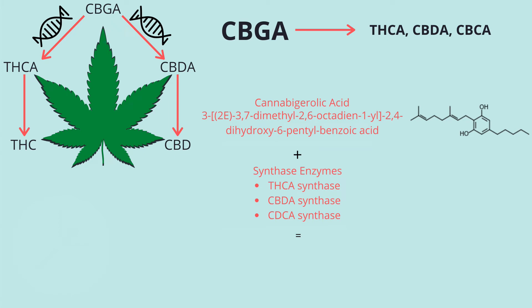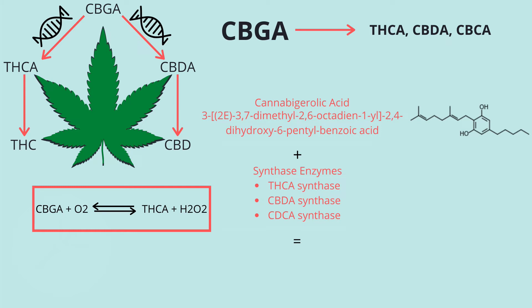So how does CBGA turn into THCA, CBDA, and CBCA? Well, during plant growth, enzymes from within the plant allocate a certain amount of CBGA to be split up into THCA, CBDA, and CBCA. Enzymes are basically something that makes something else produce quicker. The equation looks something like this — we can see that CBGA plus O2 are being turned into THCA and H2O2, which is just hydrogen peroxide.